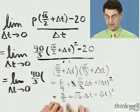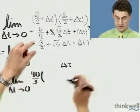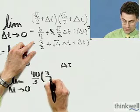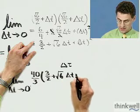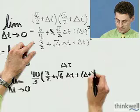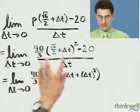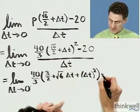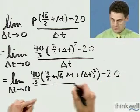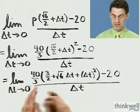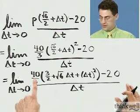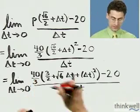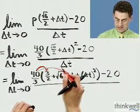If you foil that out you get this, and I'm going to write that right in place: 3 over 2 plus the square root of 6 times Delta T plus Delta T squared — all that stuff was just that squared expression. Then I've got to subtract off the 20. Look how long this is getting — potentially the longest math thing you've ever seen. Now let's distribute that 40 over 3 all the way through: it hits that term, that term, and that term.